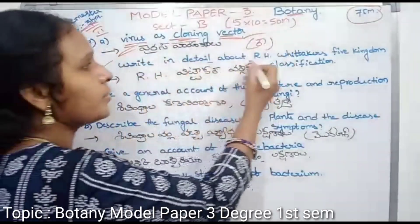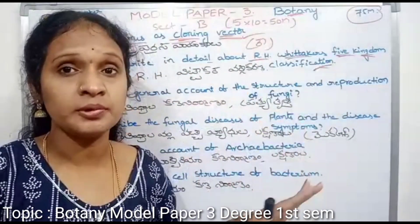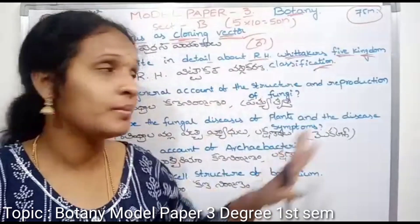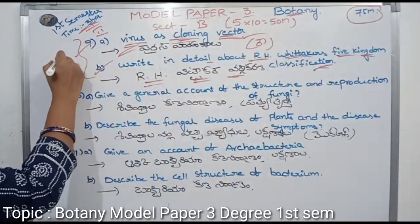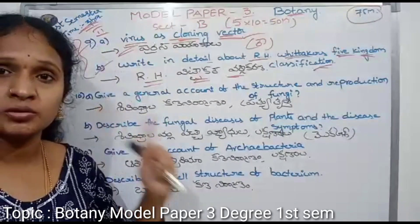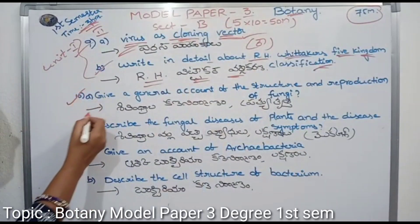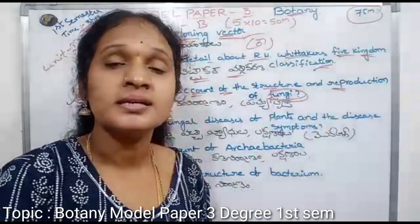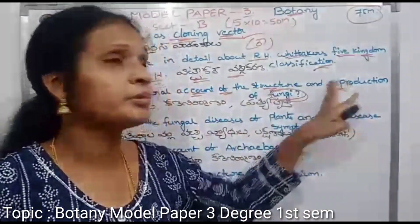Write in detail about R.H. Whittaker's 5 Kingdom Classification. Next, question 10A: give a general account of the structure and reproduction of fungi — fungi structure and reproduction system.